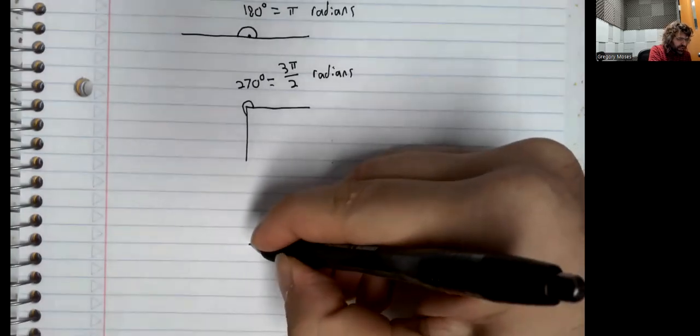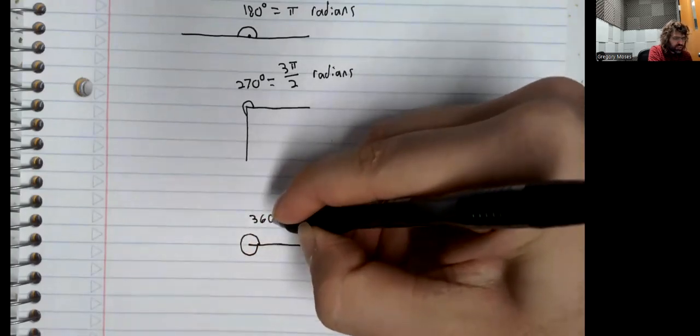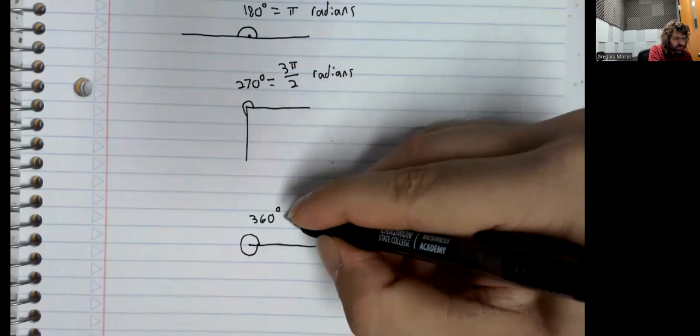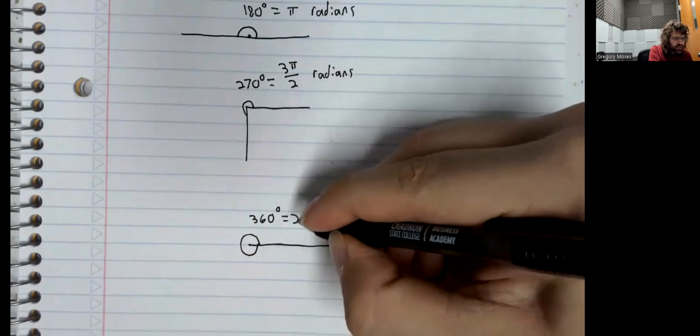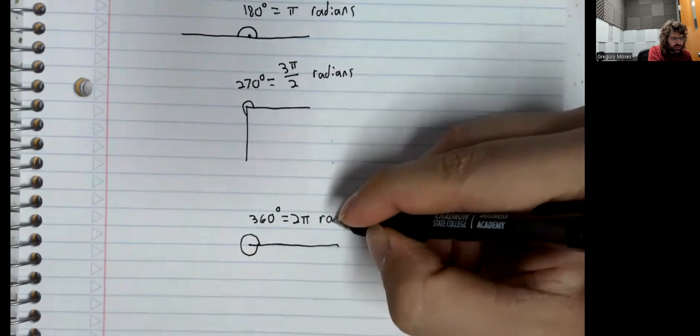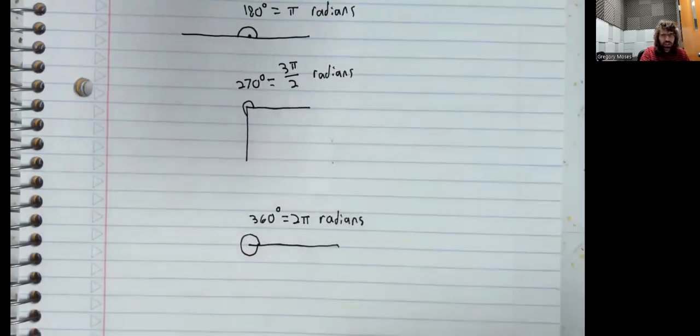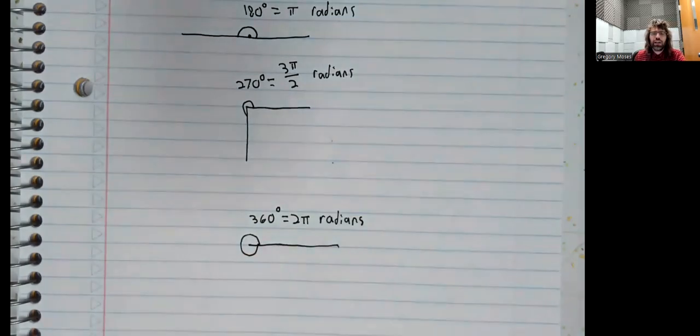And a 360-degree angle is 2 pi radians. There are 2 pi radians in a circle.